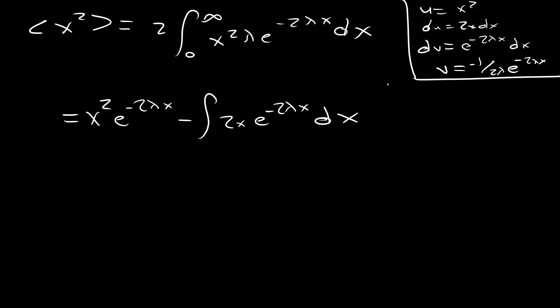Okay, and now we can just do integration by parts again. This time we'll set u equal to x, so du is dx. Our dv term is e to the minus 2 lambda x dx. And then v is simply minus 1 on 2 lambda e to the minus 2 lambda x.